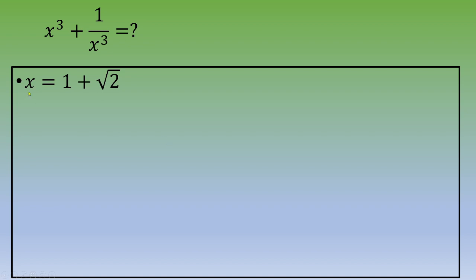So you end up with the square root of (1 plus square root of 2) squared, which equals 1 plus square root of 2. So far, we have modified the expression and we can now write x equals 1 plus square root of 2.